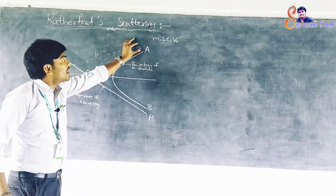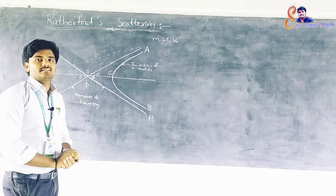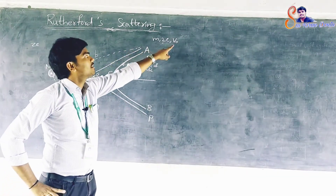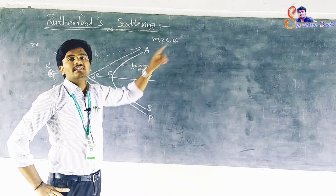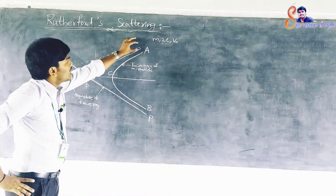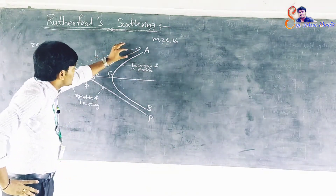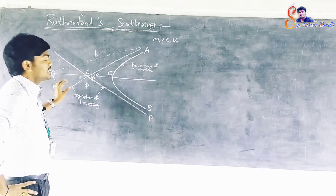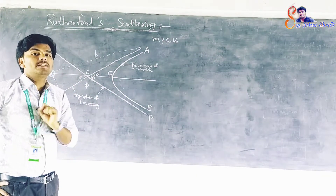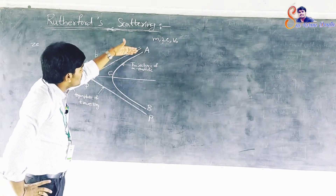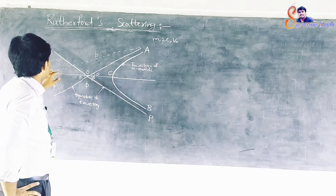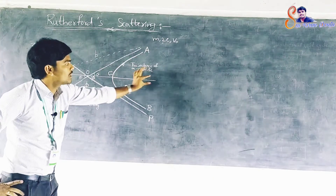With this result, the velocity of the alpha particle decreases. In the absence of repulsive force, it would have followed the straight path. But due to the presence of the Coulombic force of repulsion, it follows the hyperbolic path ACB with nucleus N as its focus.